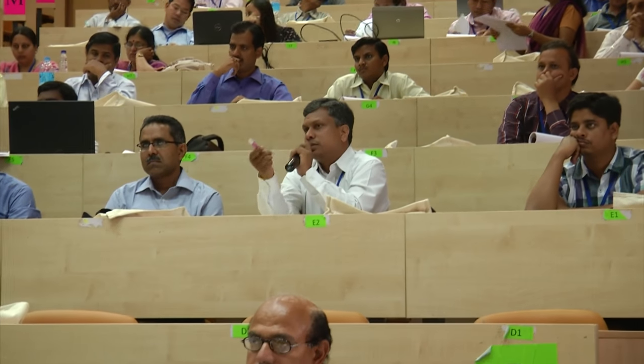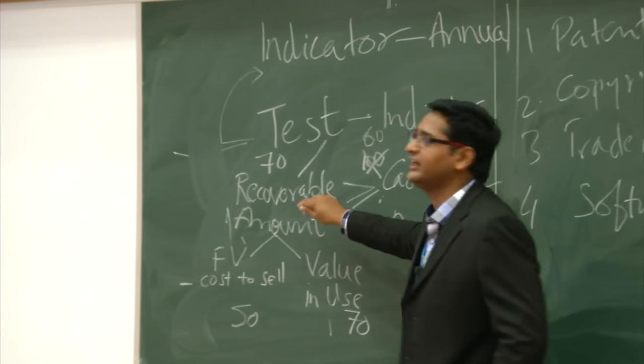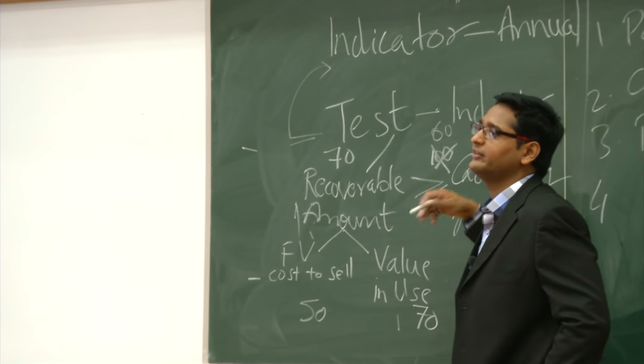If an asset value is shown at 1 rupee, the carrying amount will be 1 rupee. If you follow the net value method where assets are kept at 1 rupee, there will be no impairment because you cannot bring it below 0. Impairment can only occur when the carrying amount is greater than the recoverable amount. If the carrying amount itself is 0, the recoverable amount cannot be less than 0.